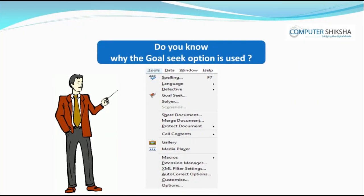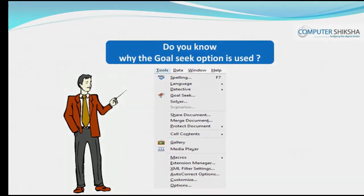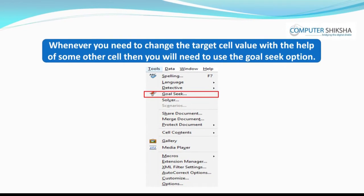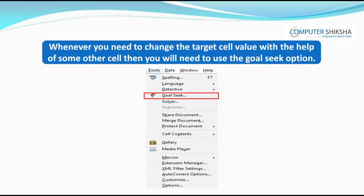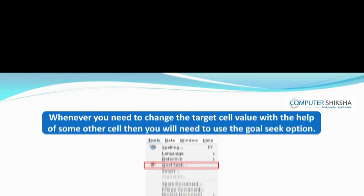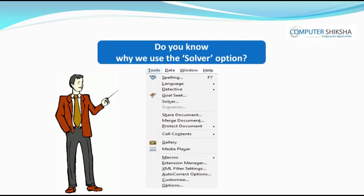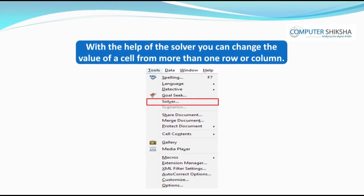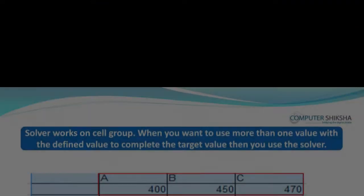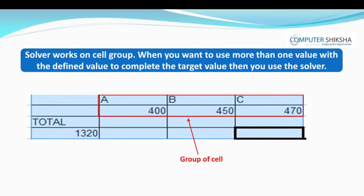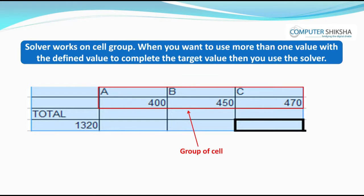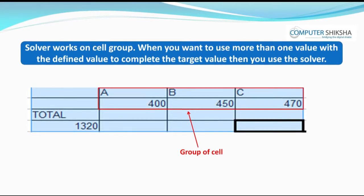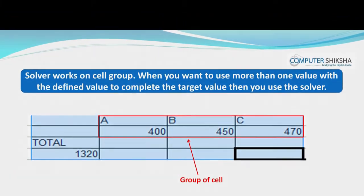Do you know why the Goal Seek option is used? Whenever you need to change the target cell value with the help of some other cell, then you will need to use the Goal Seek option. Do you know why the Solver is used? With the help of the Solver, you can change the value of a cell from more than one row or column. Solver works on a cell group — when you want to use more than one value with the defined value to complete the target value, then you use the Solver.